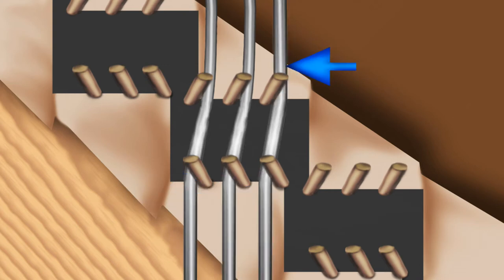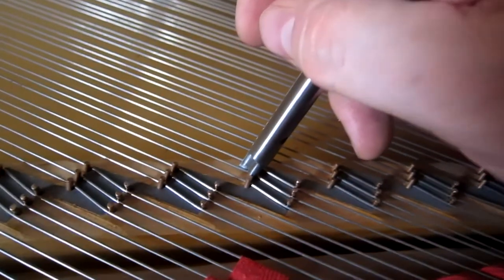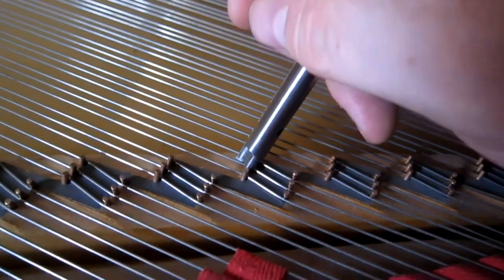Often, by tightening the bend around the bridge pin, you can hear an improvement with more clarity of tone. In many cases, using the stabilizer tool at the front pins will reduce or eliminate false beats.